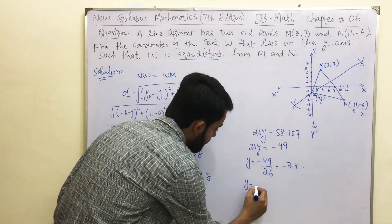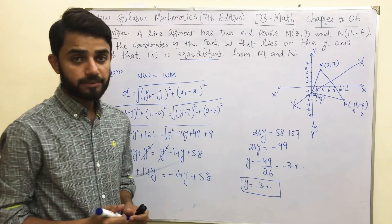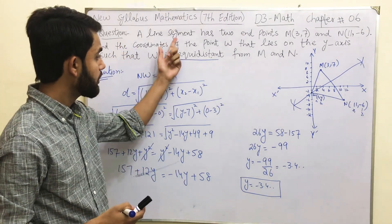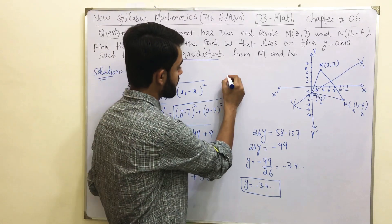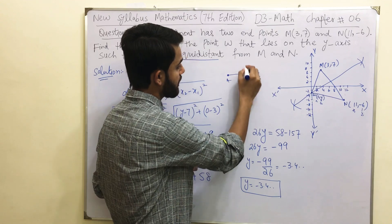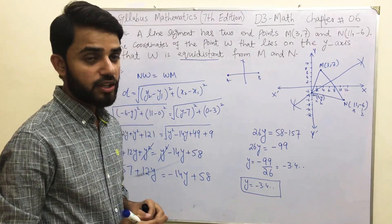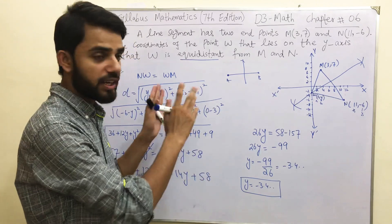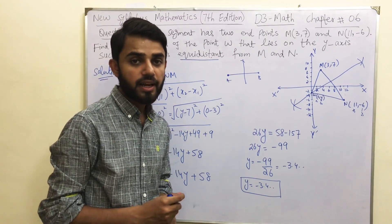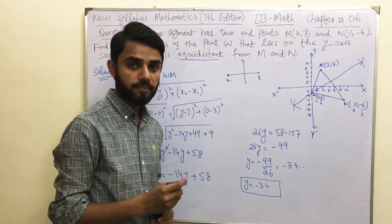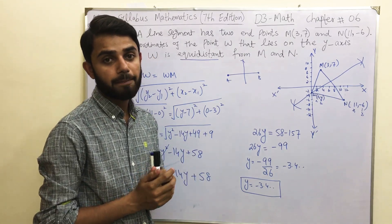So Y is approximately minus 3.8, which on the graph falls between minus 2 and minus 4 on the y-axis, confirming our result. This was a tricky question where we learned about line segments, equidistance, how to draw a perpendicular bisector using a compass, and how to apply the distance formula algebraically. If you are still confused, feel free to contact me via email in the about section or leave a comment. Please subscribe and share if this helped you.